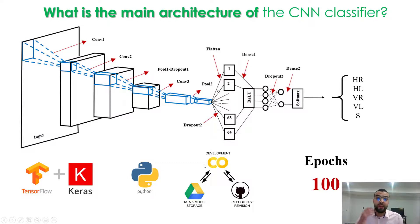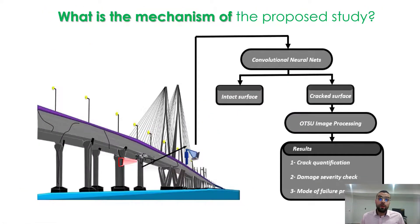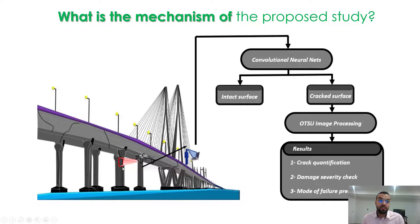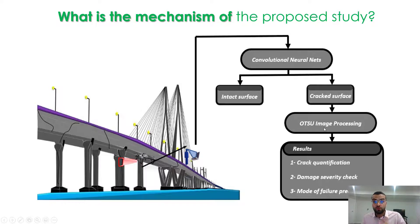Our proposed study has a user interface. Consider this example: an inspector has a computer and sends a drone to take images of a large-scale structure. The drone detects different cracks on the structure and sends images to the computer. The computer, based on our algorithm, tests whether there is any crack in the image, then proceeds to OTSU image processing to quantify the crack, check damage severity, and predict the mode of failure.